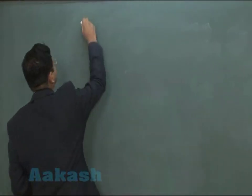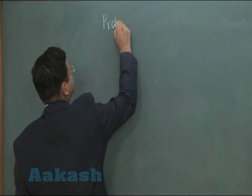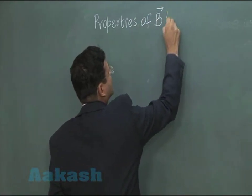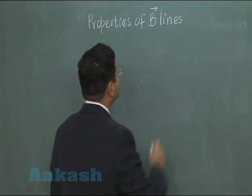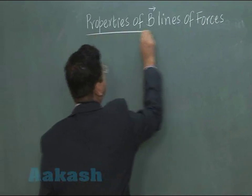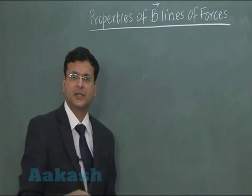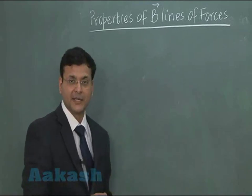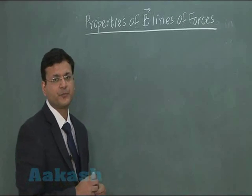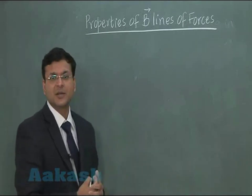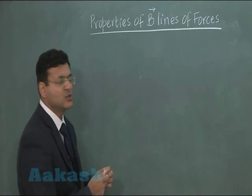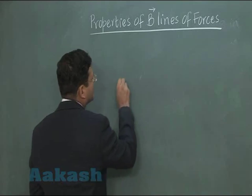Now, let us talk about properties of magnetic lines, I am calling it B vector lines of forces. Remember that in the beginning of this lecture we said that this particular topic is also called magnetostatics. The electric lines of forces, or electrostatic lines of forces, whatever kinds of properties they had, more or less similar properties you have here. Before I start writing their properties it will be very nice to draw the magnetic lines of forces due to a bar magnet.